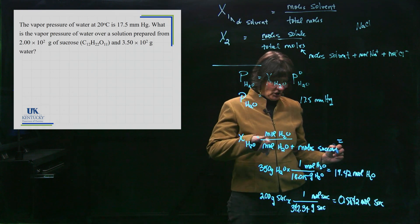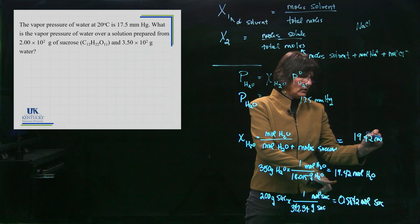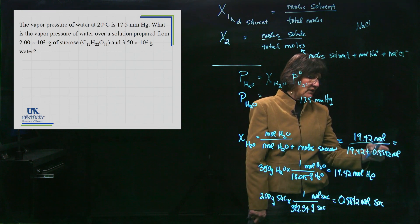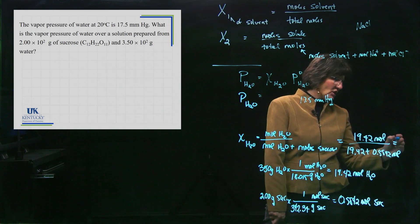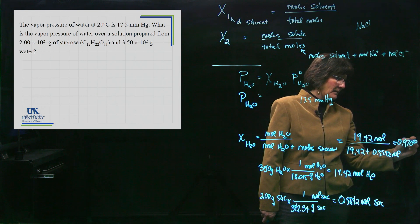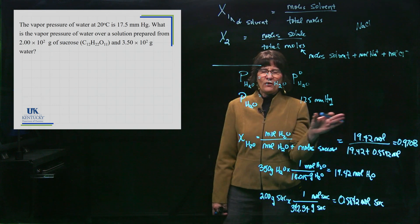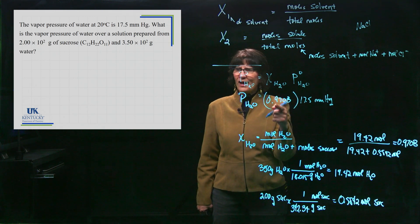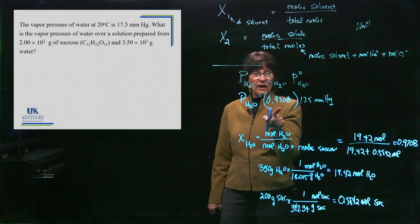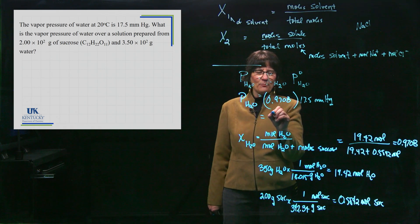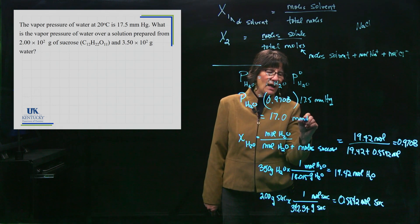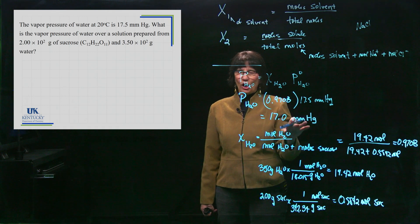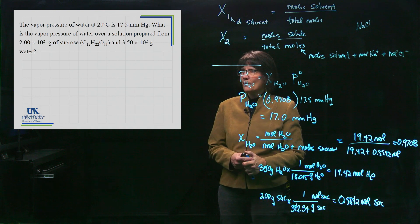Now I can calculate the mole fraction. The mole fraction of water is 19.42 moles divided by total moles (19.42 + 0.5842), giving a mole fraction of 0.9708. Mole fractions are unitless because the moles cancel. Plugging 0.9708 into Raoult's Law gives a vapor pressure of 17.0 mmHg. Remember to check your thinking — it's called vapor pressure lowering, and indeed the vapor pressure did go down from 17.5 to 17.0 mmHg.